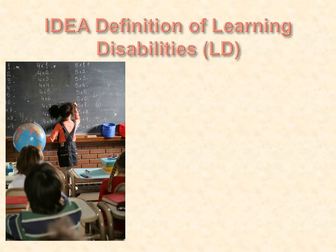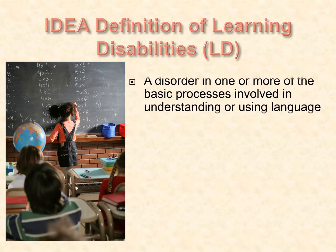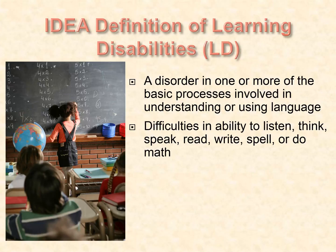Let's look at the characteristics of learning disabilities, and there are many. It's actually an information processing problem — a difficulty in understanding or using language. A person with a learning disability may have difficulty in the ability to listen, to think, to speak, even to read and write or do math. This creates great frustration, anxiety, and tension — feelings that a child or individual with LD has if they do not have the proper accommodations.